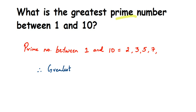Therefore, the greatest prime number is 7, since 7 is the greatest among 2, 3, 5, and 7. So that's it — this is a simple question. I hope it is clear. In case you have any question or doubt, you can drop a comment. Thank you so much for watching.